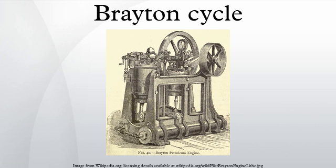In 1872, George Brayton applied for a patent for his ready motor, a reciprocating constant pressure engine. The engine used a separate piston compressor and expander, with compressed air heated by internal fire as it entered the expander cylinder. The first versions of the Brayton engine mixed vaporized fuel with air as it entered the compressor by means of a heated surface carburetor. The fuel/air mixture was contained in a reservoir/tank and then admitted to the expansion cylinder and burned.